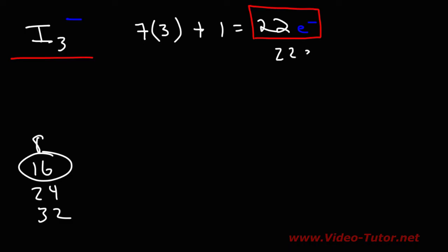Next, subtract the number of valence electrons by that number, and so you'll get 6. So this means that the central iodine atom is going to have 6 electrons or 3 lone pairs on it. Each lone pair corresponds to 2 electrons.